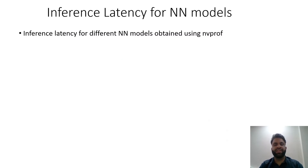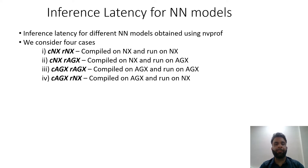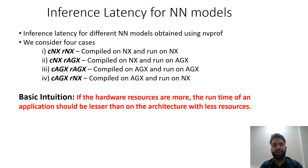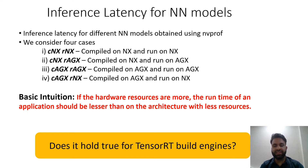Next, we discuss inference latencies of neural network models obtained using the nvprof tool. We have two scenarios: building a TensorRT engine on one board and inferencing on the same board, or building on one board and inferencing on another. This leads to four cases: compile on NX and run on NX, compile on NX and run on AGX, compile on AGX and run on AGX, and compile on AGX and run on NX. The basic intuition is that more hardware resources should lead to shorter runtime, but does this hold for TensorRT engines?